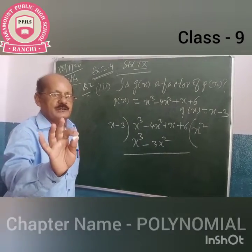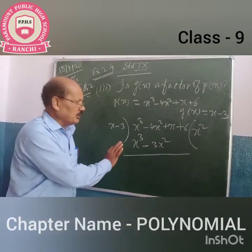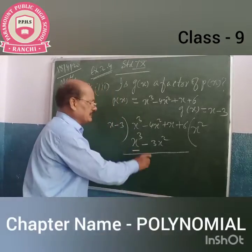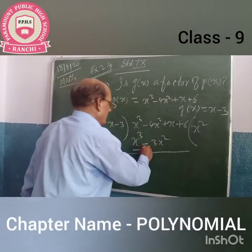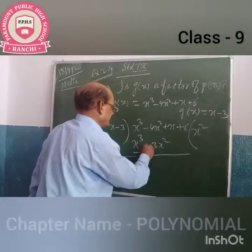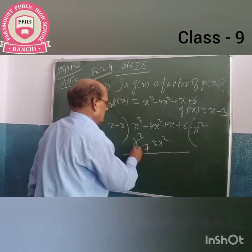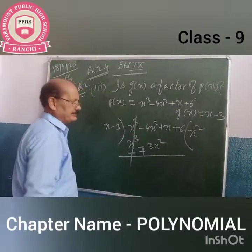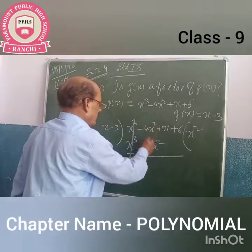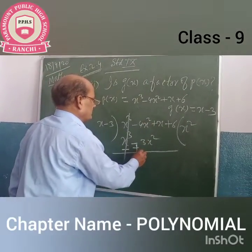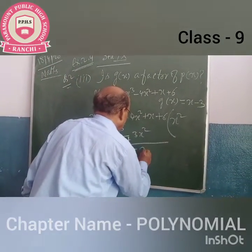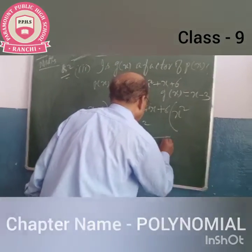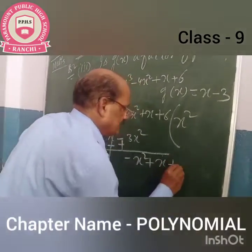x cube is positive — there is no sign, you must understand it is positive. Then you have to change the sign: minus 3x square. Then you have to change — plus x cube, plus x cube or minus x cube will be subtracted. Minus 4x square plus 3x square will be minus x square, plus x, plus 6.